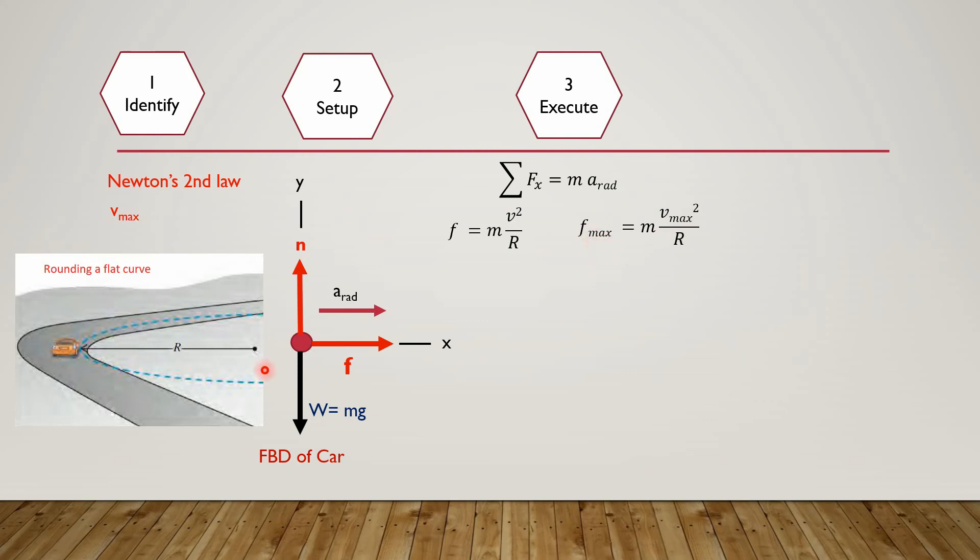Applying Newton's second law along the y-axis, sigma Fy equals m a radial. Since a radial along the y-axis is zero because there is no motion along the vertical direction, sigma Fy equals zero. Net forces along the y-axis are the normal reaction and weight. Therefore, n minus mg equals zero, or n equals mg.